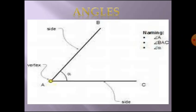Next, see this diagram — B, A, C. This is the angle. In this, BA is one side and A is the vertex, and AC is the other side. How to give a name for this angle? Angle A, or otherwise angle BAC. This is also an example for angles.